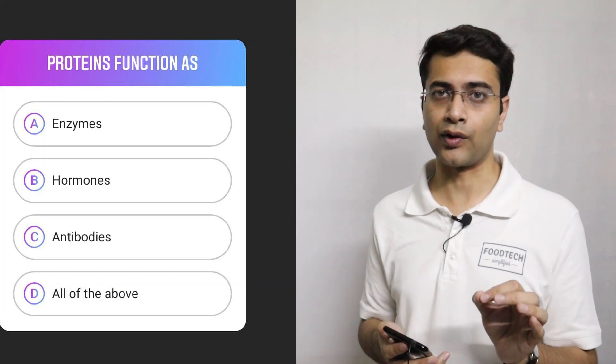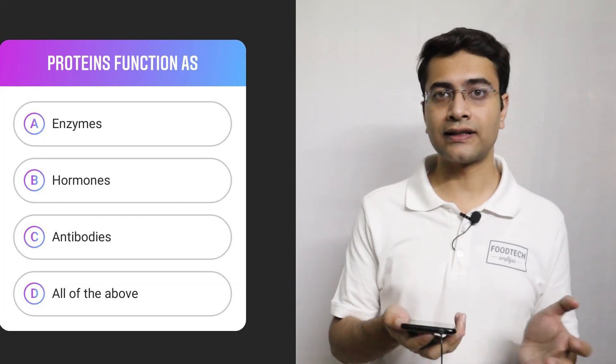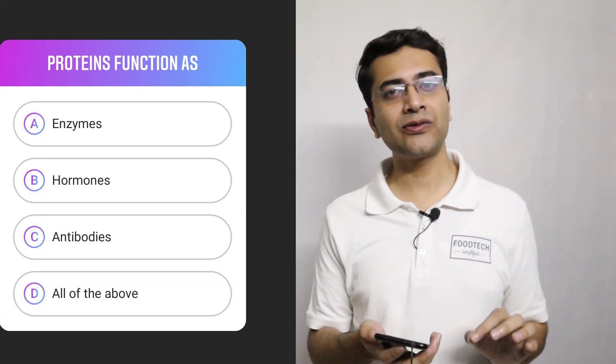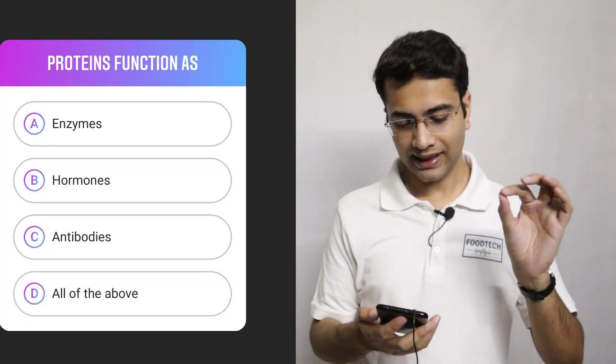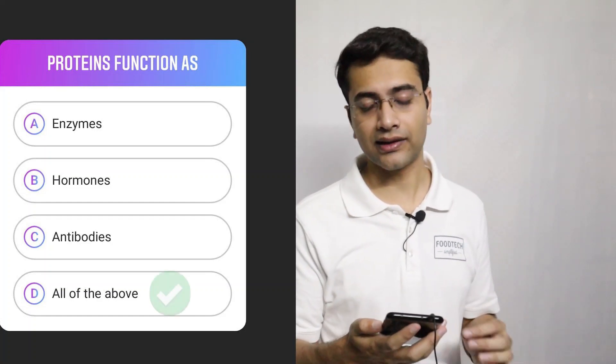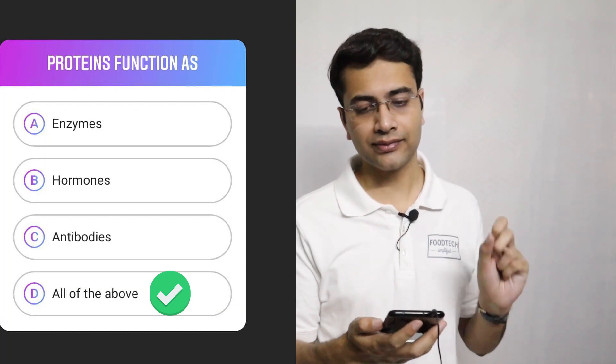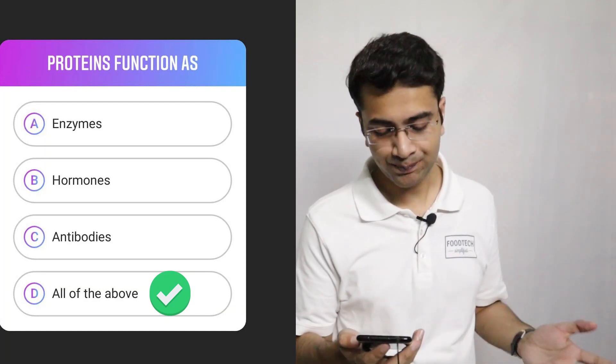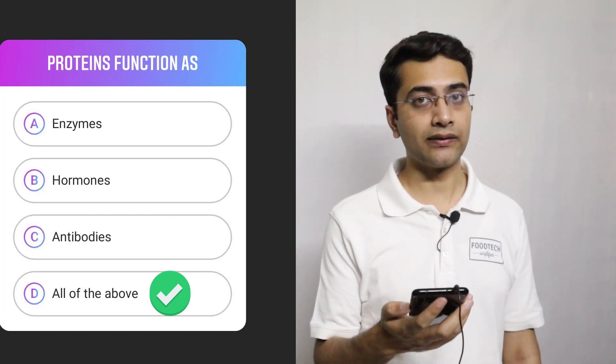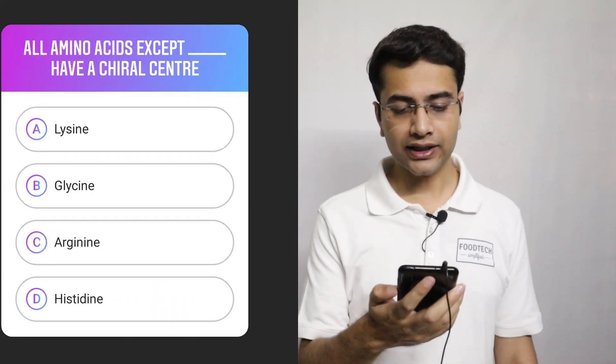A lot of functions where enzymes are involved and basically enzymes are proteins. Proteins also function as antibodies. So the correct answer for this question is option D because proteins function as enzymes, hormones and antibodies as well. All of the above, option D is the correct answer.